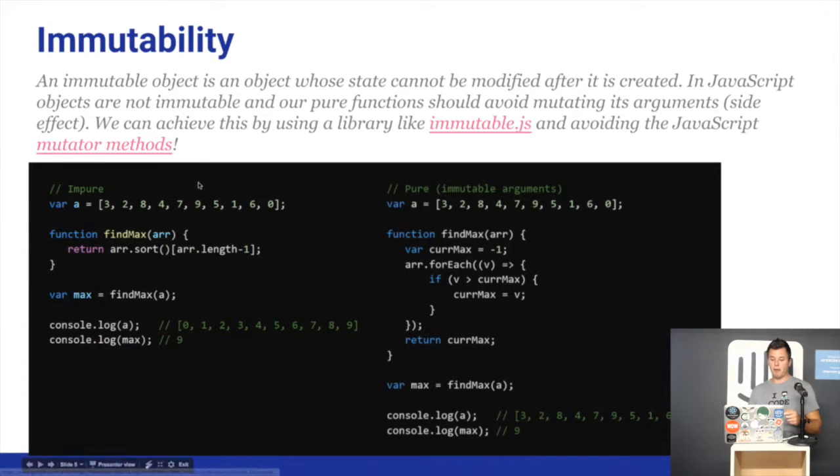What I mean by that is, in this example, we're finding the maximum number in an array. The way I'm doing that is sorting the array and then finding the last element. The problem by doing that is that by calling sort, I didn't think about it, but I have changed the original array. So after calling the function, you can see here that the array has been sorted outside of the function. So I have done a state mutation and because of that, this function is not pure.